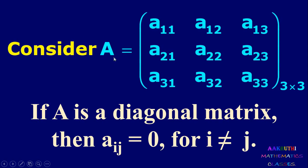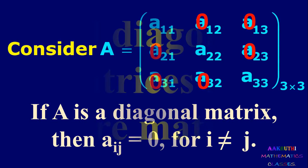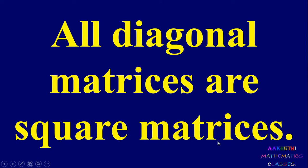Consider a 3 by 3 matrix A equal to [a11, a12, a13; a21, a22, a23; a31, a32, a33]. If this is a diagonal matrix, then aij equal to 0 when i is not equal to j — that is a12, a13, a21, a23, a31, a32 should all be zero. All diagonal matrices are square matrices.